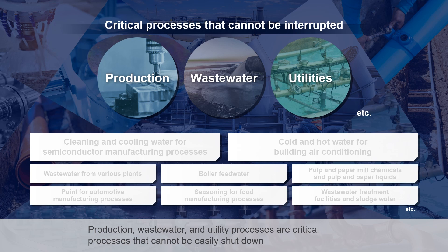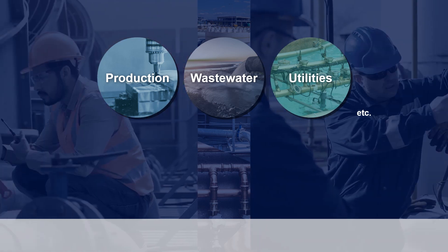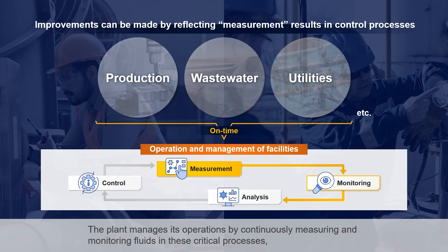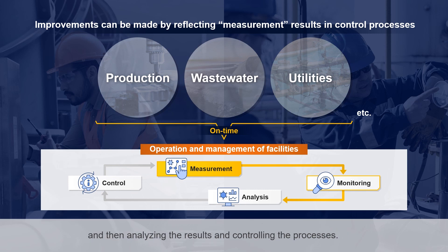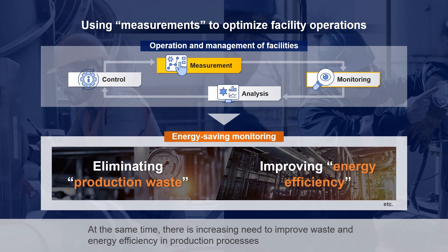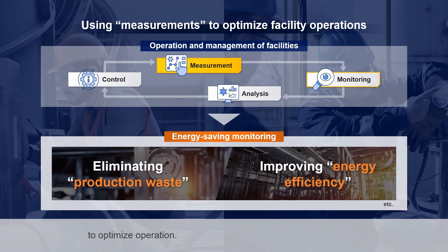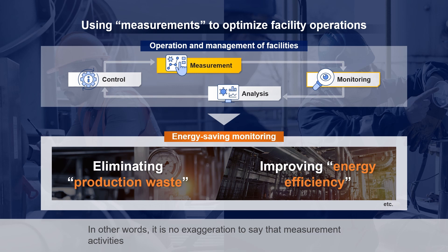Production, wastewater, and utility processes are critical processes that cannot be easily shut down due to their impact on plant operations. The plant manages its operations by continuously measuring and monitoring fluids in these critical processes, then analyzing the results and controlling the processes. It is important to ensure stable operation by detecting small variations and abnormalities in advance through operational control. At the same time, there is increasing need to improve waste and energy efficiency in production processes, in response to the growing demand for energy savings. To achieve this, it is necessary to manage daily operations and discover challenges that need to be overcome to optimize operation. In other words, measurement activities are the first step in stabilizing operations and achieving energy savings in facilities.